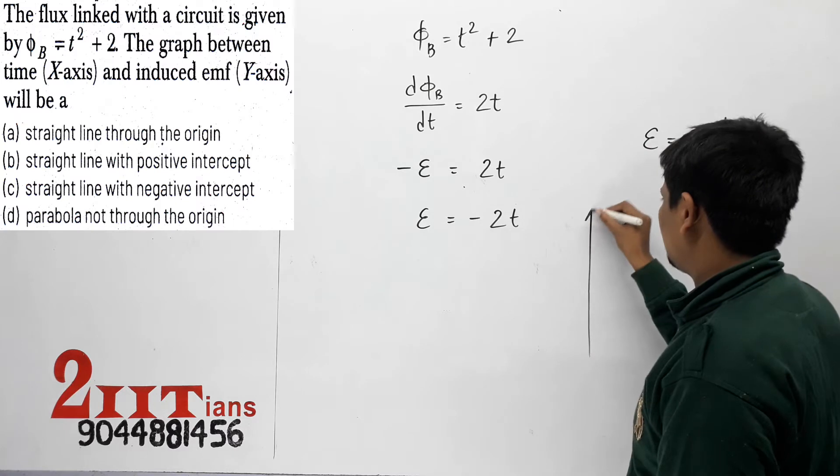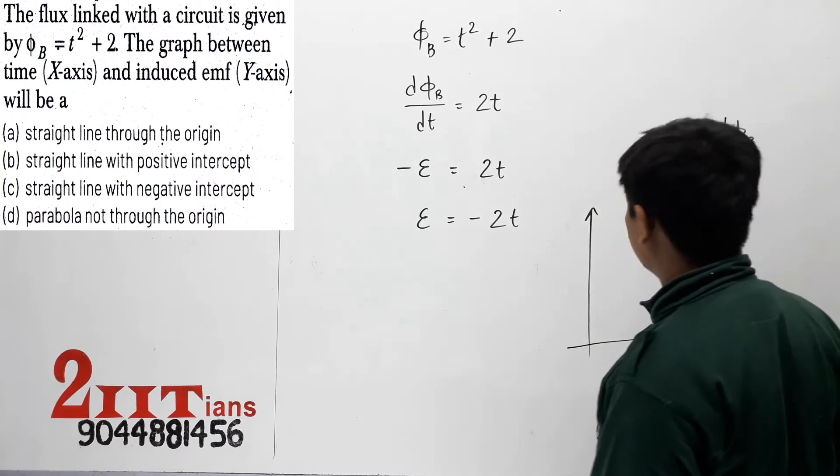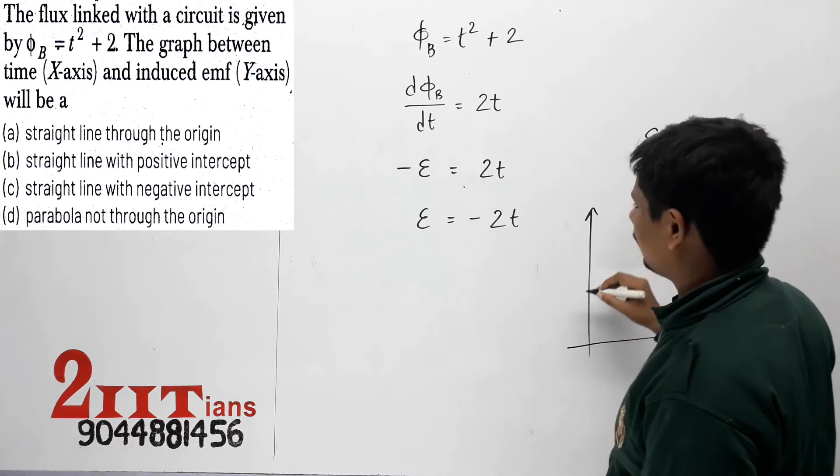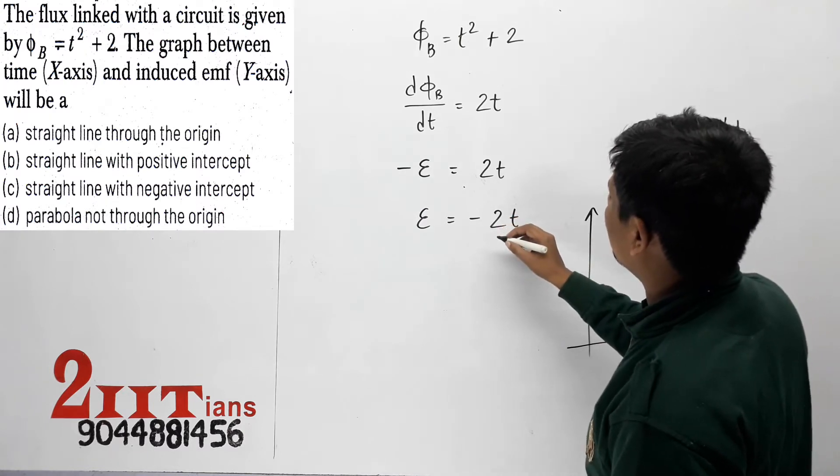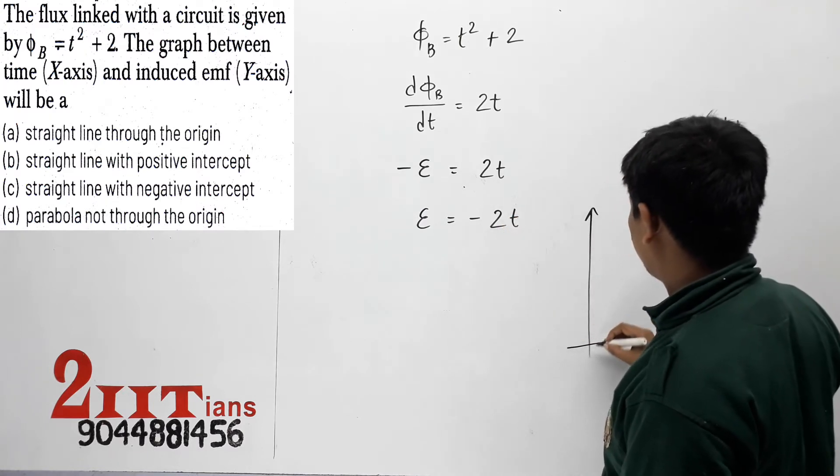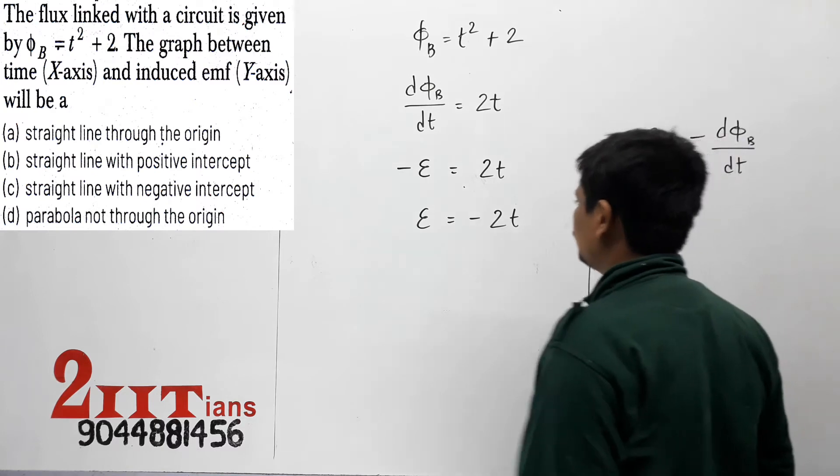So if we create the graph, this will be a straight line with slope minus 2.